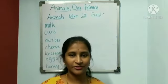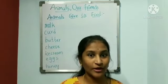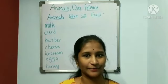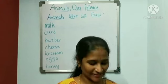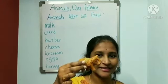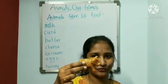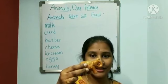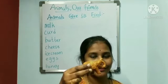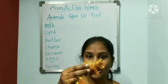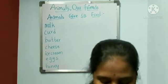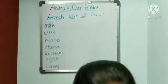Now let me show you some animals. You have to identify whether they are wild animals, farm animals, or pet animals. Are you ready? See this — what is this, children? It is an elephant. Where does it live? It lives in the jungle. So animals which live in the jungle are called wild animals. Now let me show you another one.